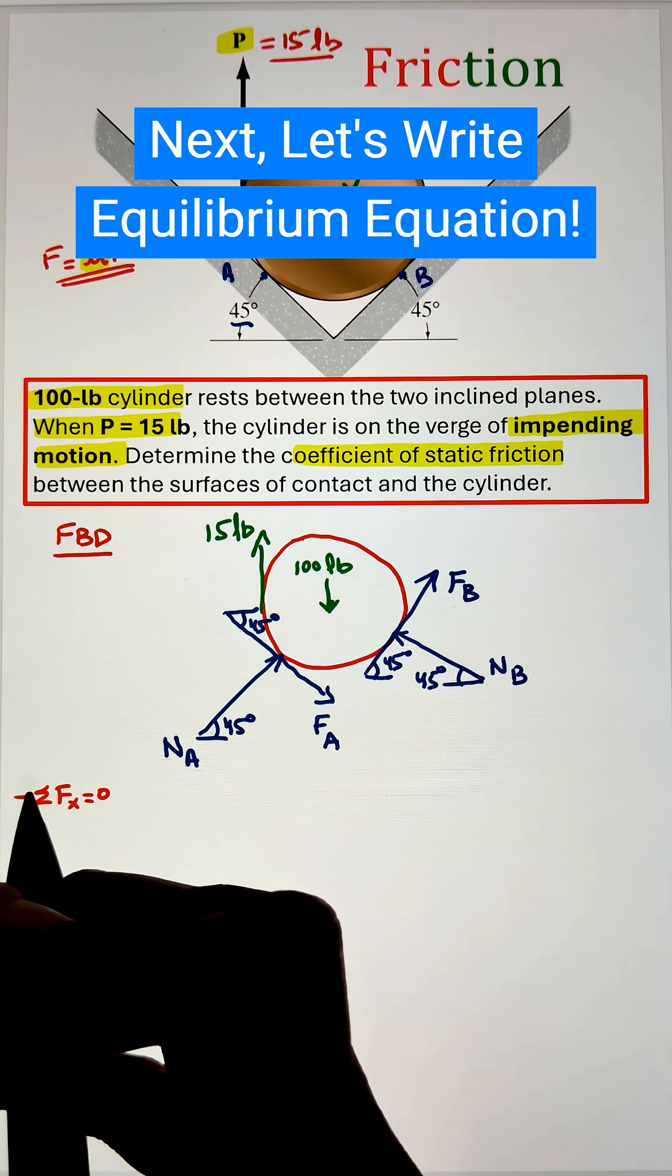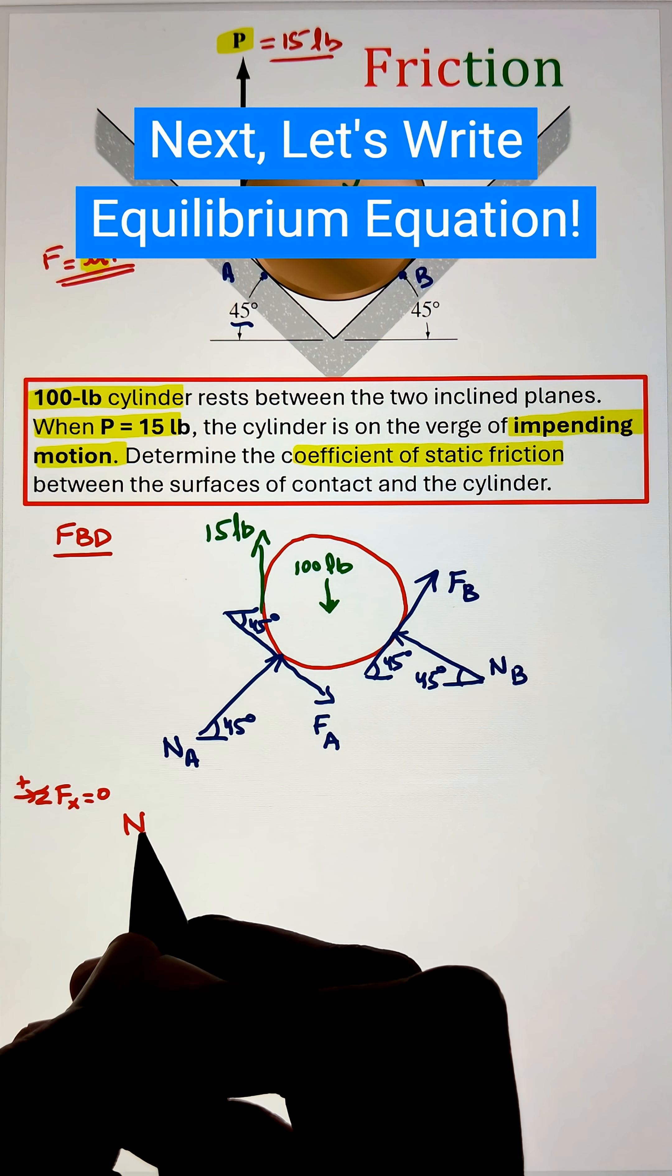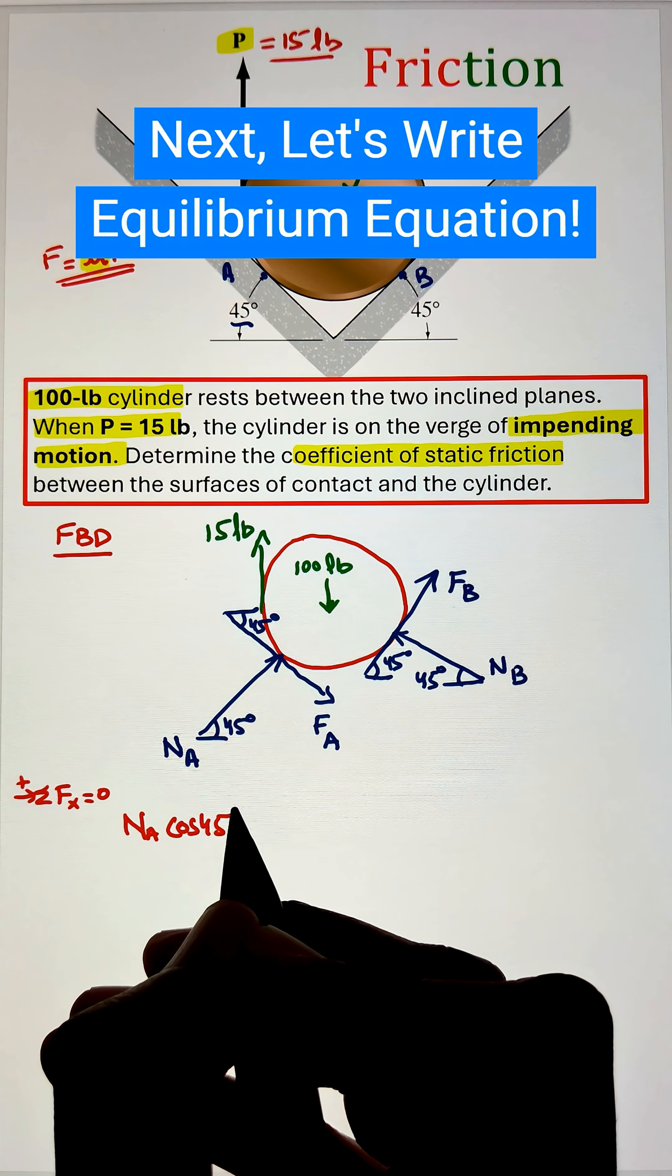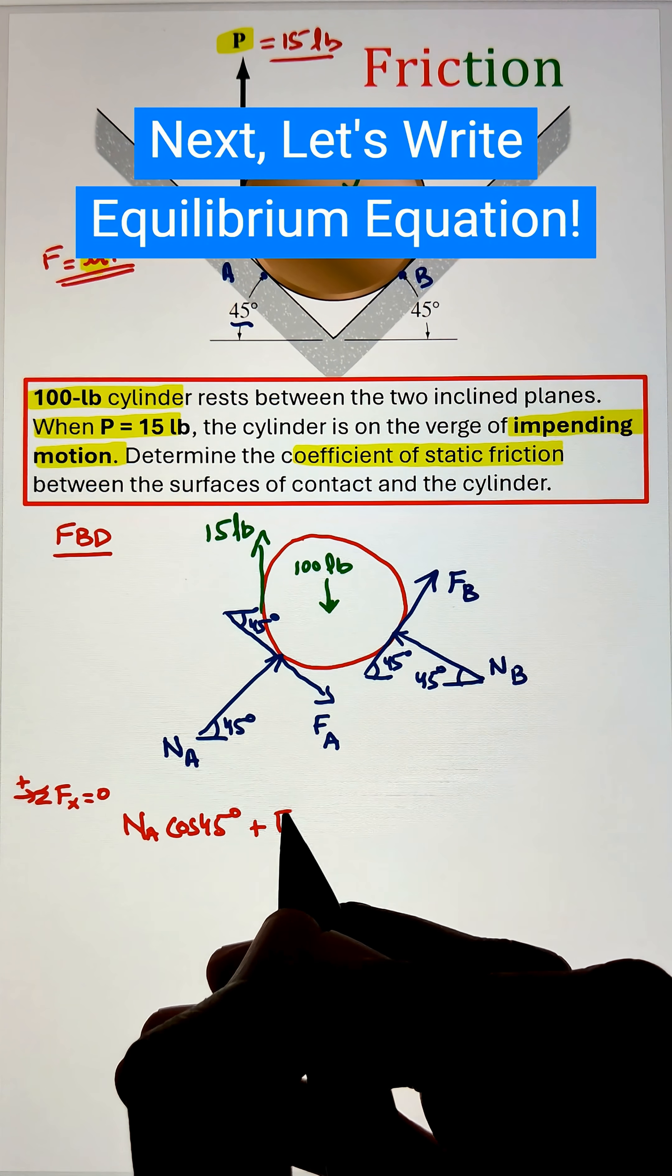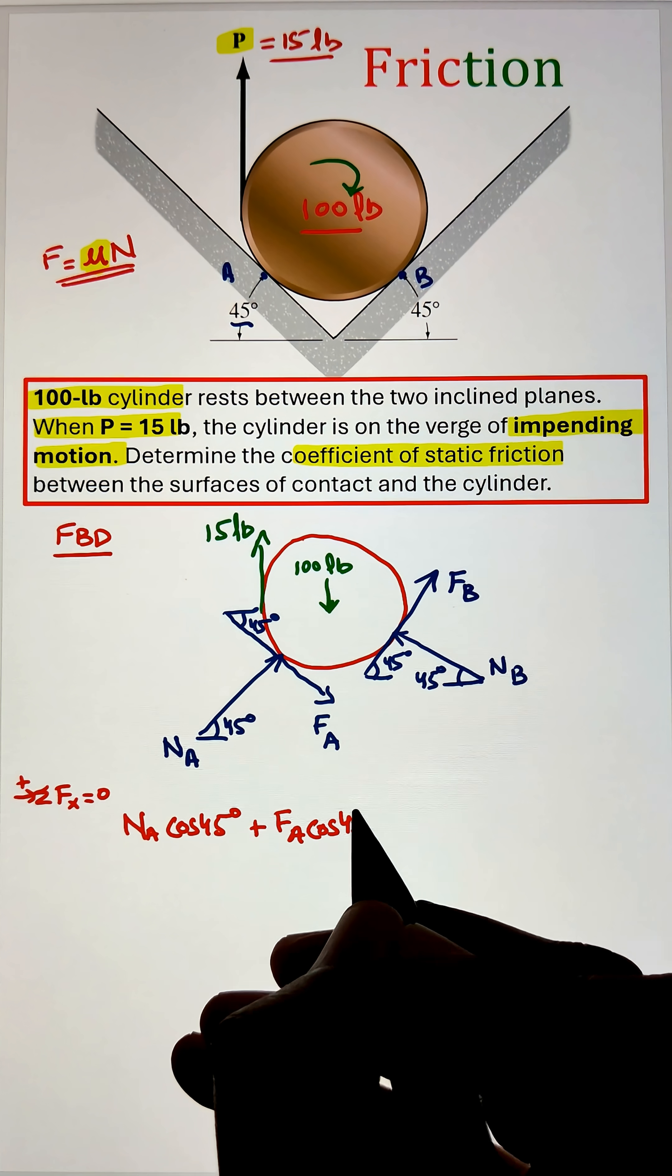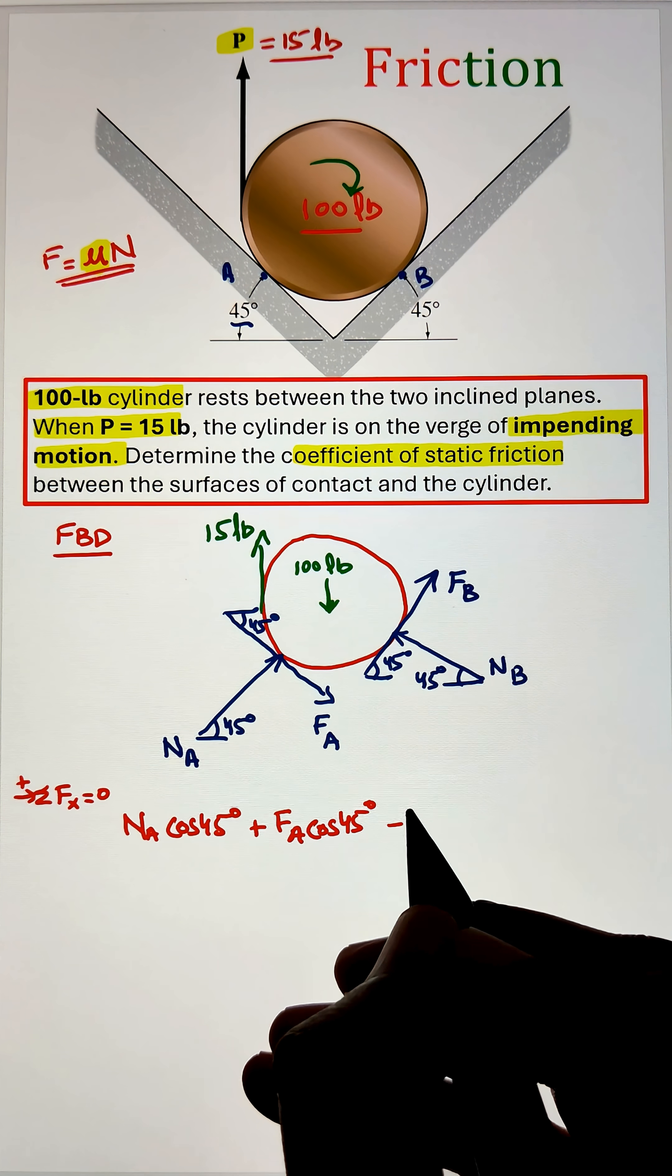Now since the inclined plane is at an angle of 45 degrees from the horizontal, our normal and the frictional force will also make an angle of 45 degrees with respect to the horizontal x axis as shown in the free body diagram.